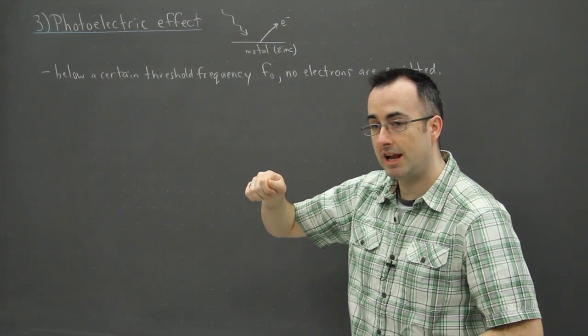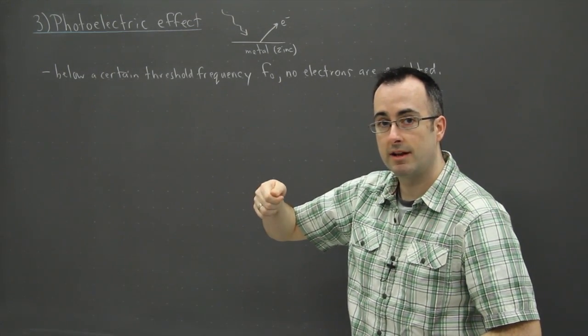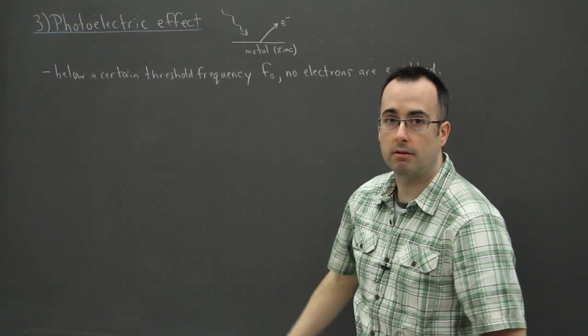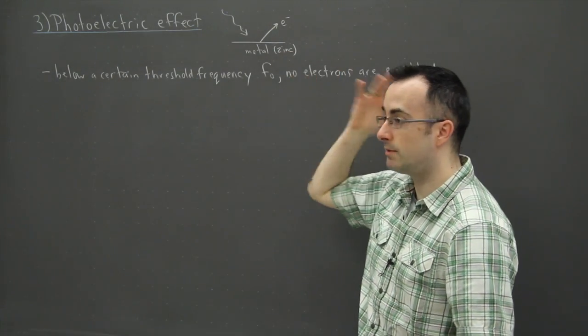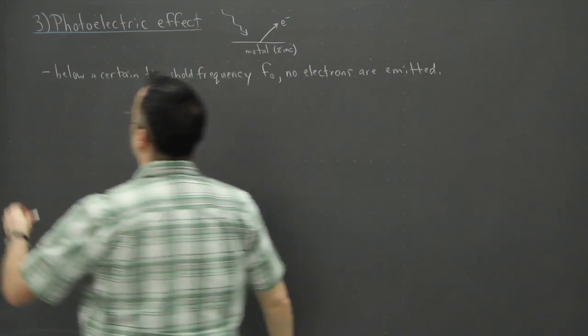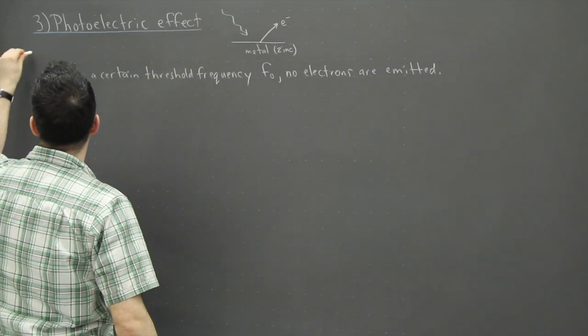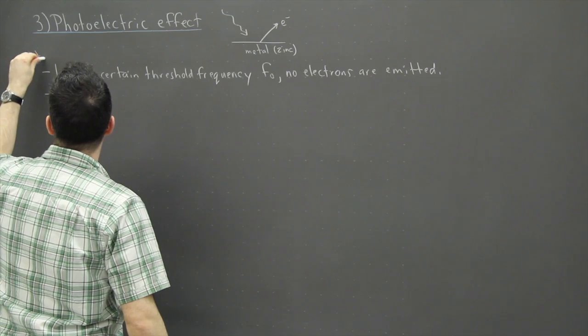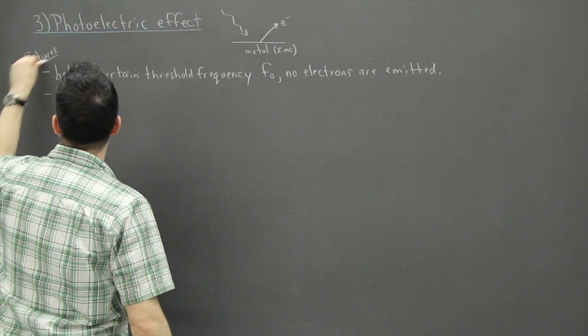And if you just change the color of the light, all of a sudden at some point maybe you get electrons kicked out. So that was the first thing that caused people like whoa what? So that was the first sort of, these are the features of photoelectric effect.